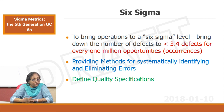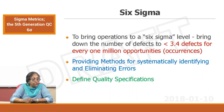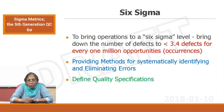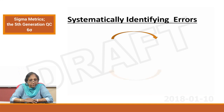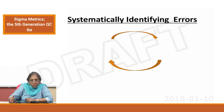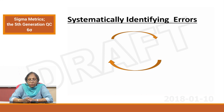You get to that point by providing methods for systematically identifying and eliminating errors. That is what we have been talking about all this while — error detection programs like internal control programs. One more thing you need to do is define your quality specifications, that is setting your goals. You need to say I am going to be at least four sigma or five sigma in which operation, and you have to strive towards that. Another mechanism is setting goals through six sigma.